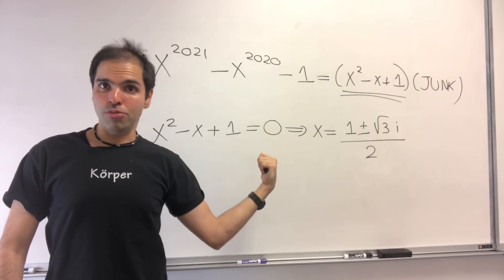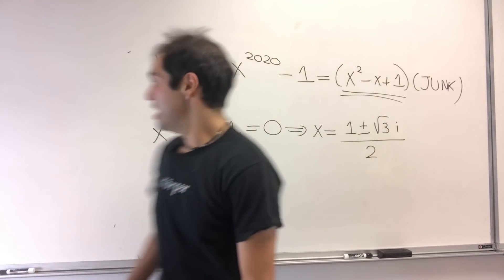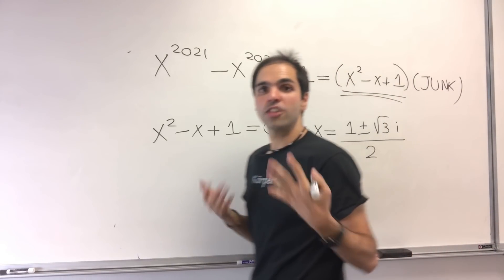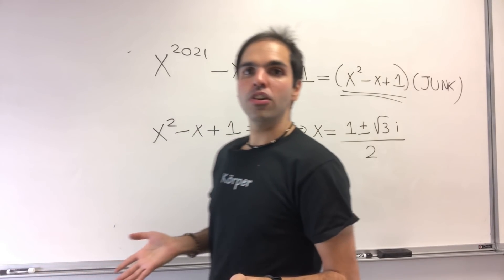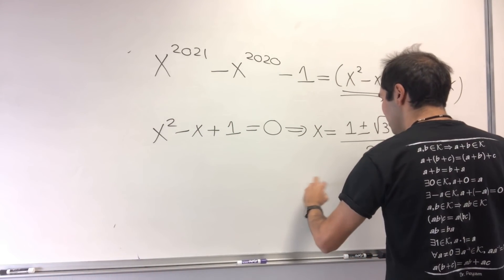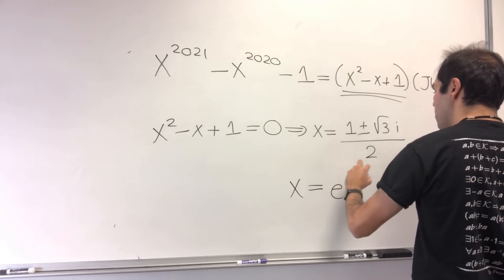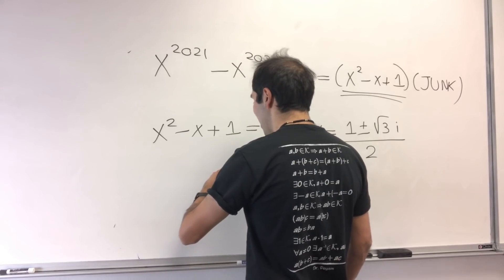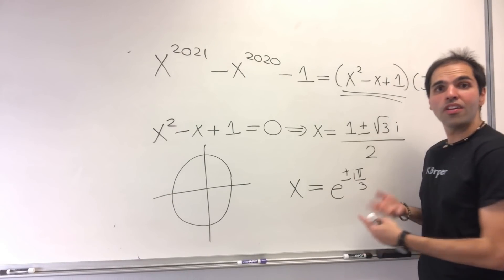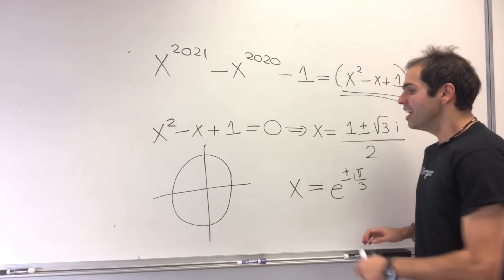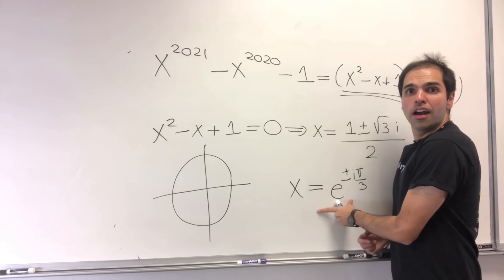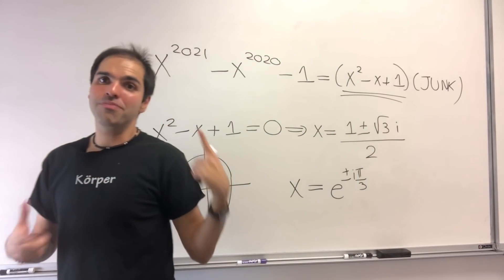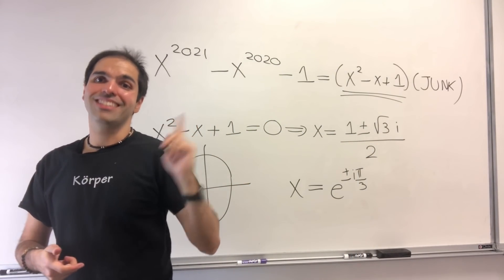But those are not just random roots. They're actually super famous. Kind of roots of the year, if you wish. Because 1/2, that's cosine of π/3. √3/2, that's sine of π/3. So, x is just e^(iπ/3), or minus that. So, ±e^(iπ/3). And then, what are those? What are those called? They're called roots of unity, because it turns out those are solutions of x^3 = -1, which is not quite too surprising, because remember, we used x^3 = -1 at the very beginning.